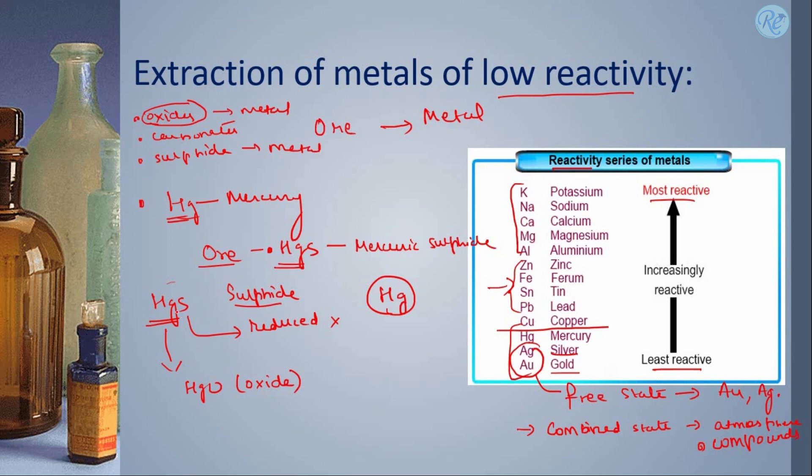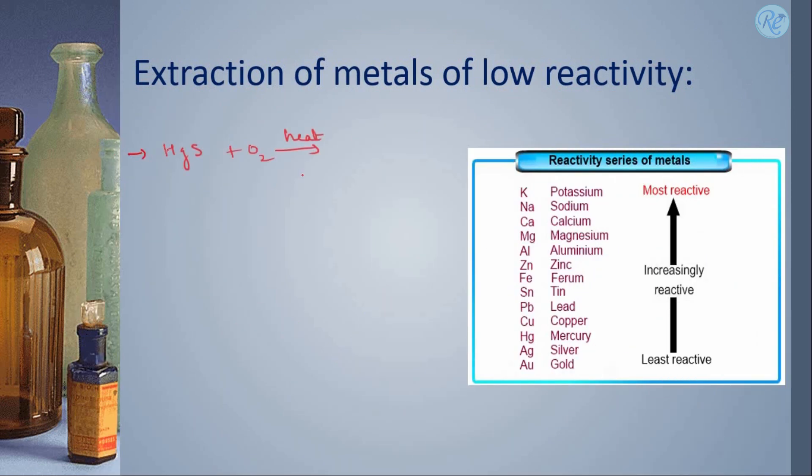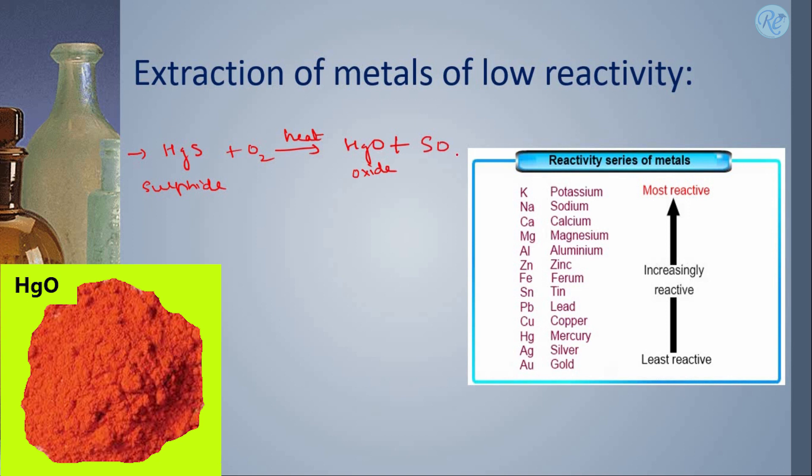Thus the sulphide form of mercury is first converted into its oxide form by reacting it with oxygen in the presence of heat. The first step is to convert sulphide into oxide by reacting it with oxygen in the presence of heat. Here we get HgO and SO₂.